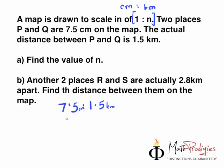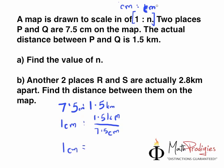All you have to do is divide by 7.5, so it becomes 1 cm is to 1.5 kilometers divided by 7.5. So 1 cm equals 1.5 kilometers divided by 7.5 cm. Now, 1.5 kilometers equals 1,500 meters. Do it step by step, don't rush it.